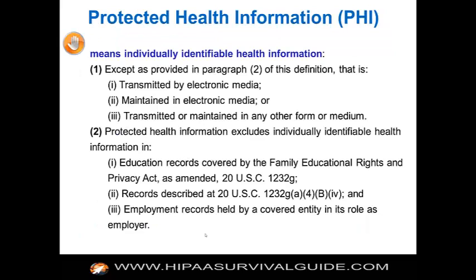Protected health information changed under the omnibus rule. The definition changed because the underlying definition of health information changed — PHI now includes genetic information and now excludes the PHI of anyone who has been deceased for more than 50 years. That doesn't mean a covered entity or business associate has to maintain PHI for death plus 50 years — there are no requirements in the regulations for duration of maintaining PHI; that is a business decision.